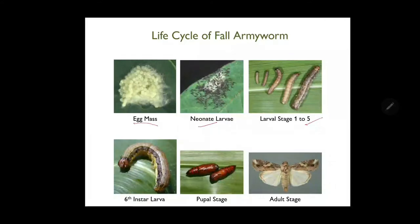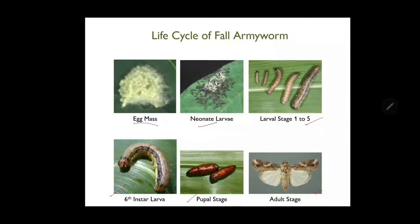The larval stage goes from 1st instar to 6th instar. The picture here shows the 6th instar larva. Pupation takes place inside the soil, and the adult is quite similar to Spodoptera litura, but has bright hind wings and brown colored forewings.